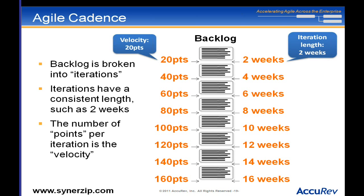For example, if I have a story to implement pieces of an online survey system — a true/false question is two points, a multiple-choice question is two points — that's four points, and I'd need about 10 such stories to fill one two-week iteration. So I've got a cadence of how much work that team can get done in each iteration.